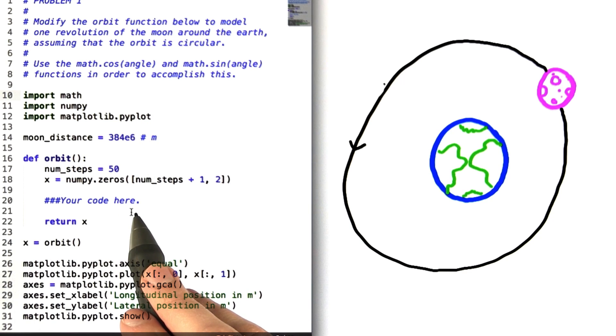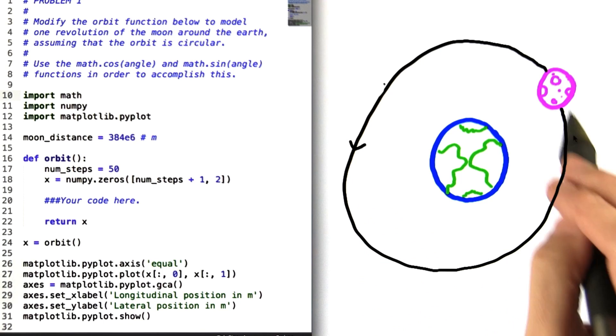When you finish filling in your code here and run the program, you should get a plot of a circular trajectory of the moon around the earth.